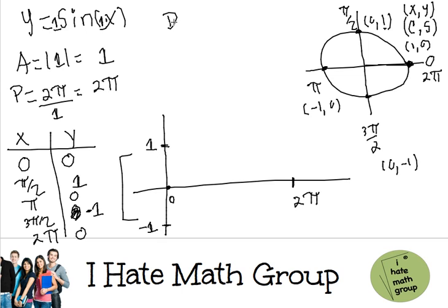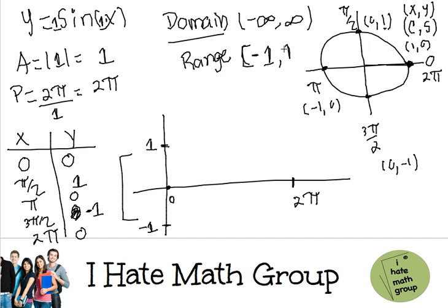Therefore, when they ask me the domain and the range, well, look at this. The domain is going to be all real numbers. But the range is just going to be, in this case, since the amplitude is 1, it's going to go from negative 1, including it, to 1.